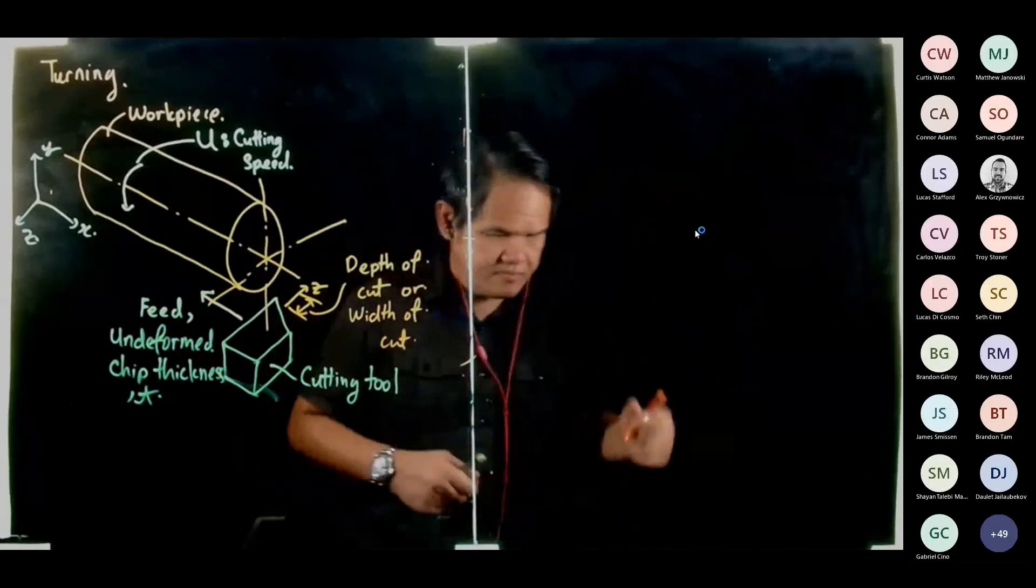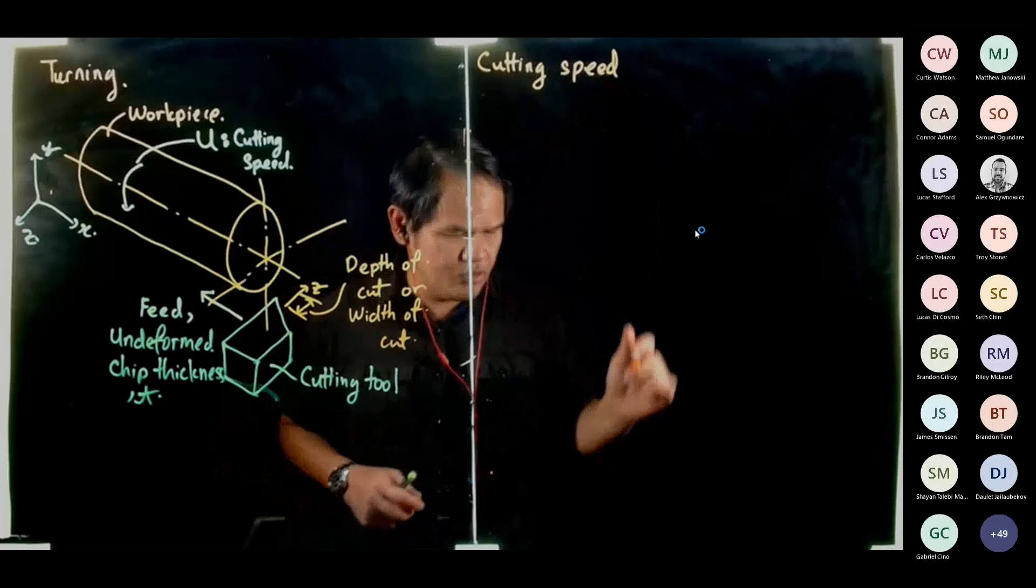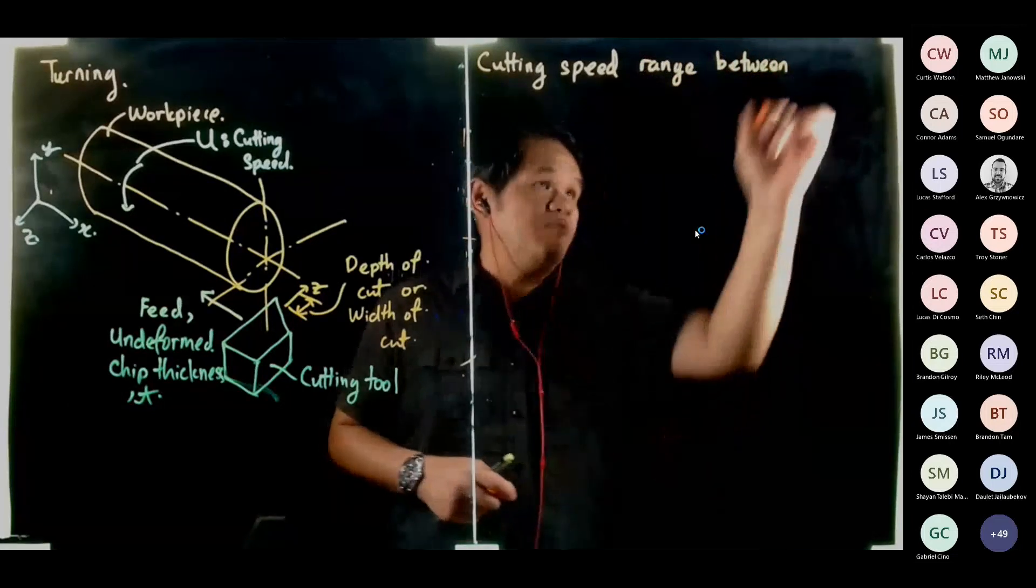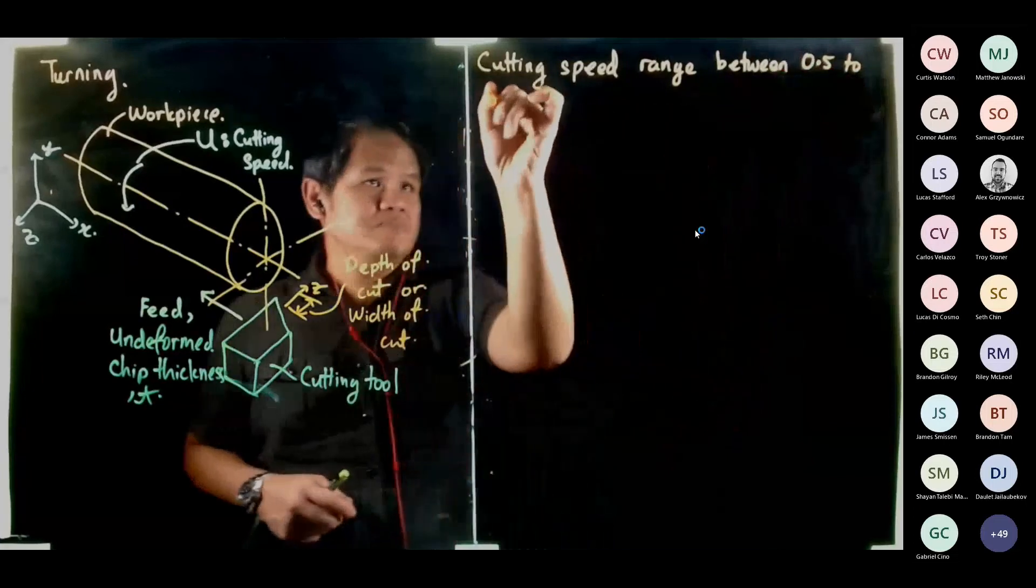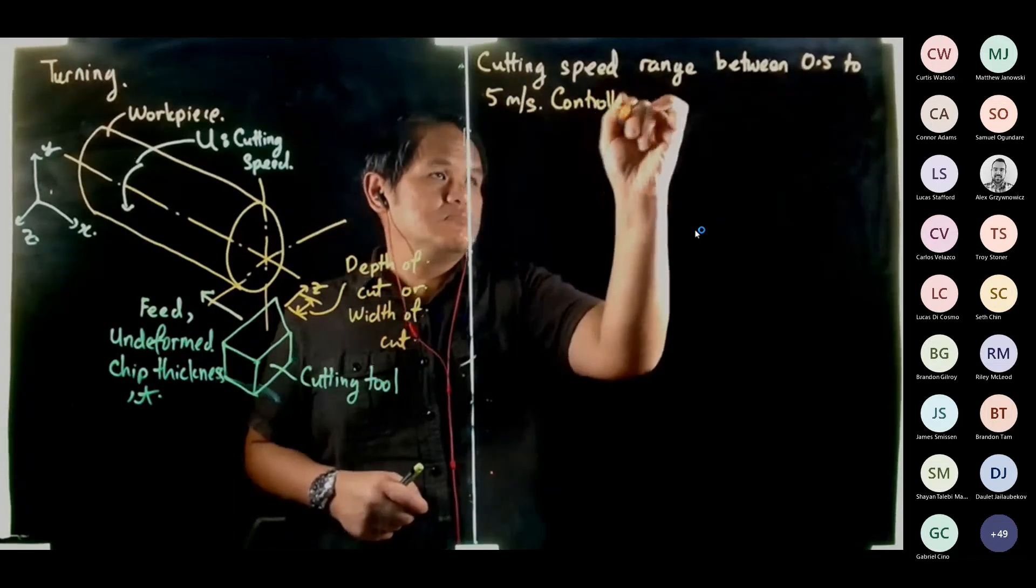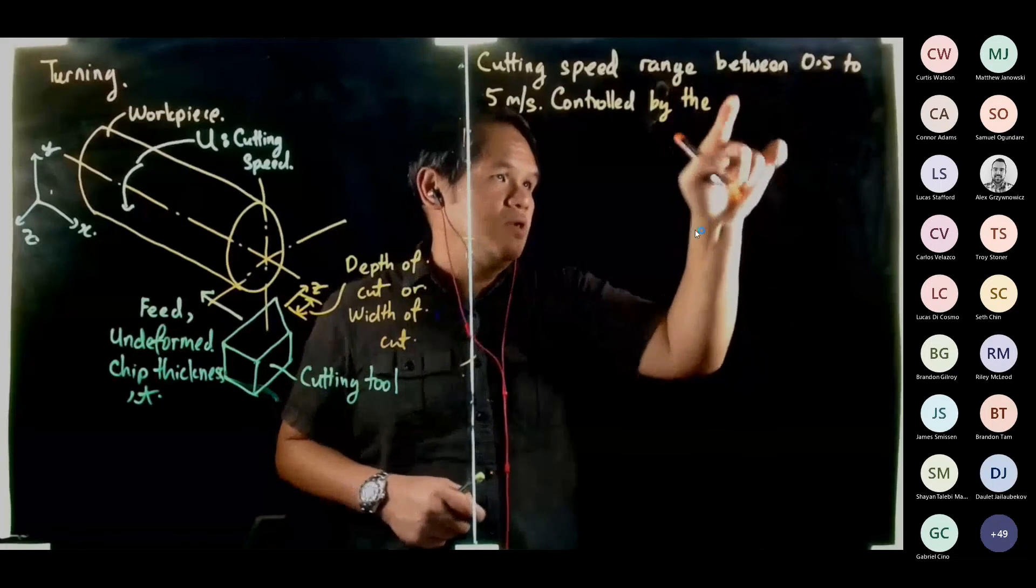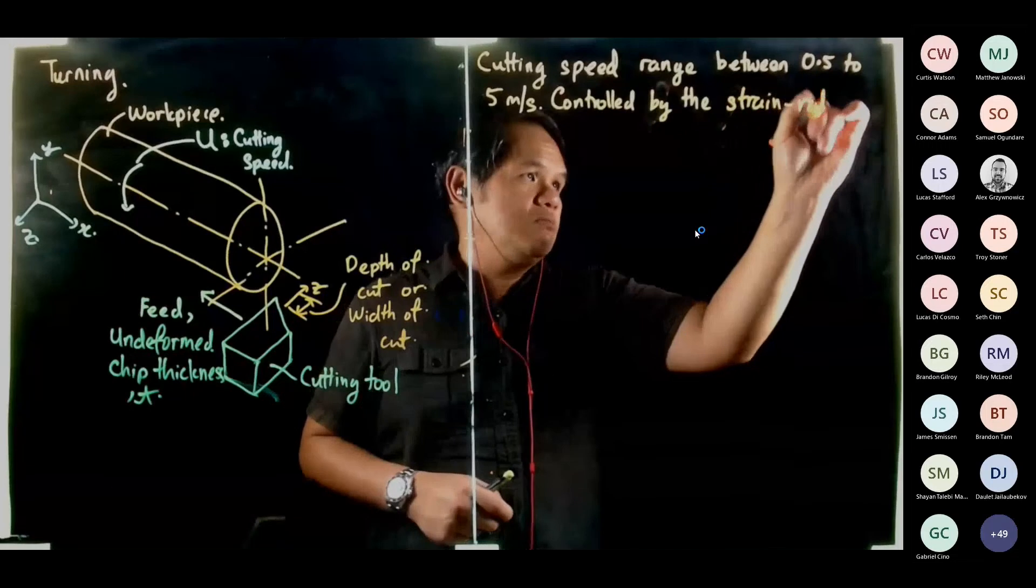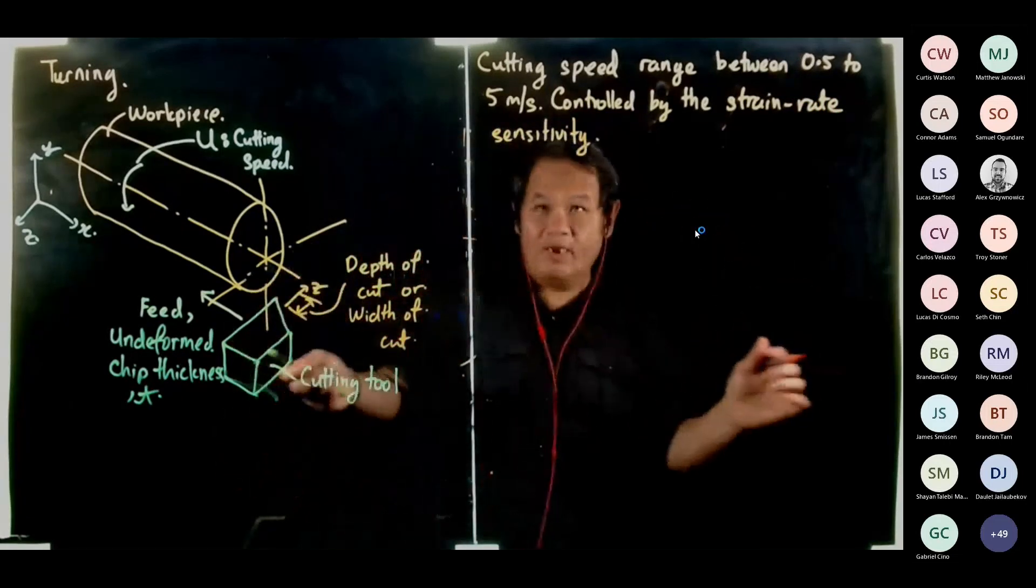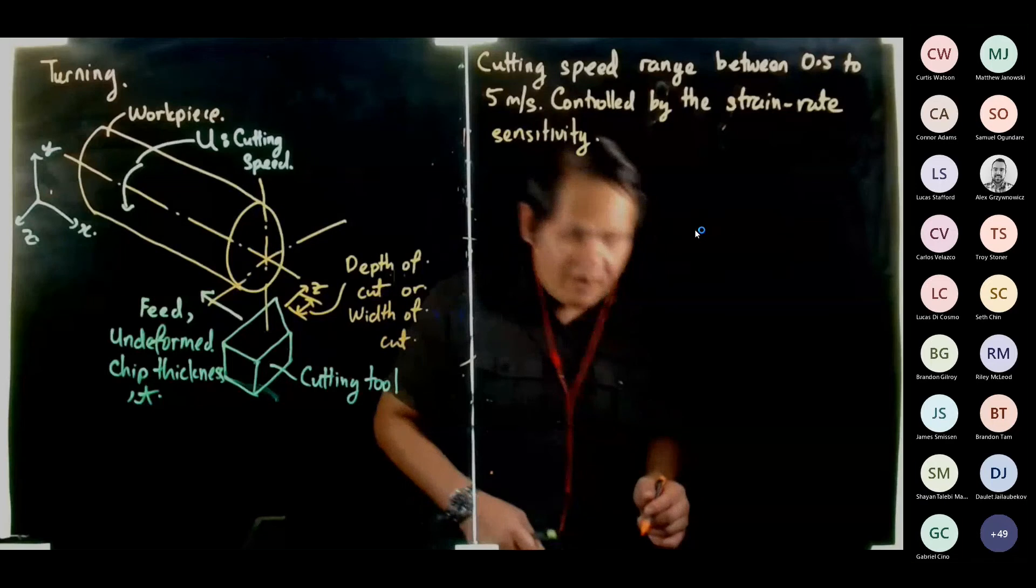So now the cutting speed ranges between 0.5 to 5 meters per second and it's controlled by the strain rate sensitivity. Sounds familiar, yes or no? Seen that before.